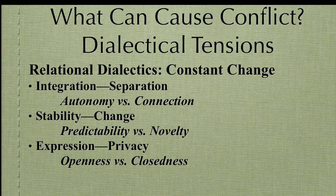What can cause dialectical tensions? Relational dialectics is defined by constant change. It is a perspective that views interpersonal relationships as constantly changing rather than stable, and revolves around how relational partners manage tensions. The first dialectic that Baxter and Montgomery identified was integration versus separation, also thought of as autonomy versus connection. In the early stages of a relationship, we tend to spend as much time as possible with another person, but there is also that tension between spending time with them and spending time with yourself.